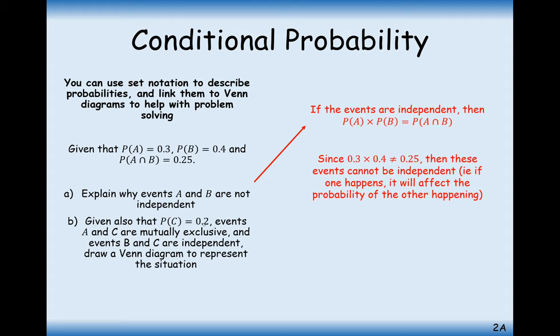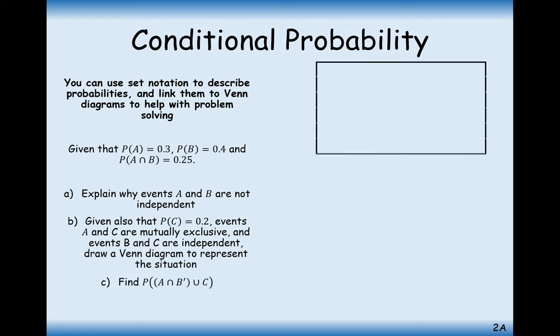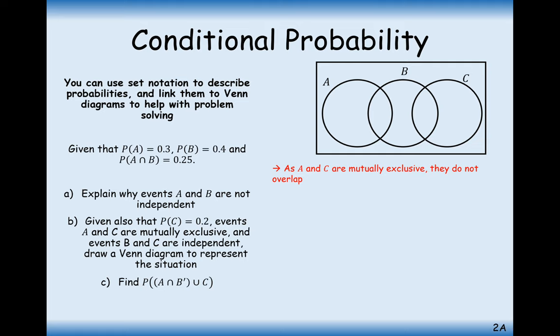Given that probability of C is 0.2, events A and C are mutually exclusive, and events B and C are independent, draw a Venn diagram to represent this situation. A and C are mutually exclusive—their Venn diagrams never intersect. You cannot have event A happen at the same time as event C. B goes in the middle of both. This is how our Venn diagram is going to look. You can clearly see here that A and C do not overlap, and that means they're mutually exclusive.